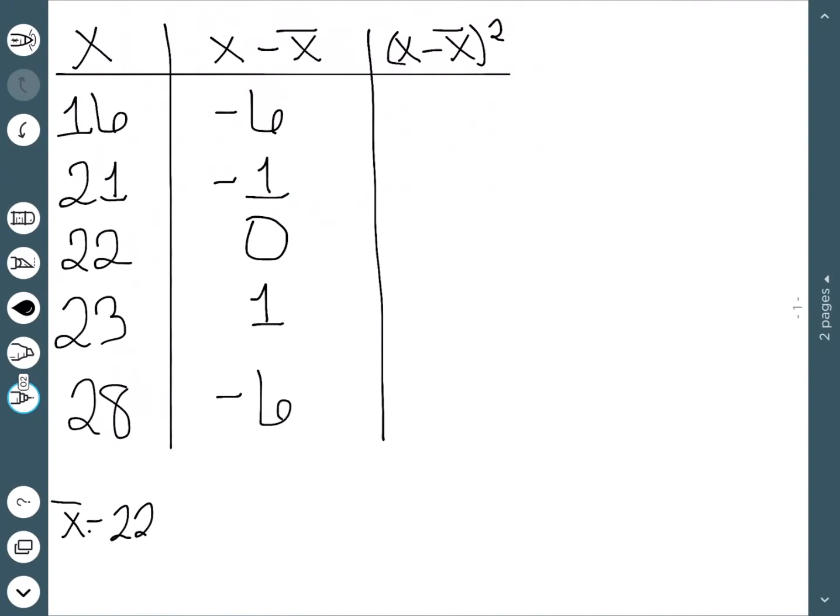We then need to square all of these values. Negative 6 squared is 36. Negative 1 squared is 1. 0 squared is 0. 1 squared is 1. And 6 squared is 36.